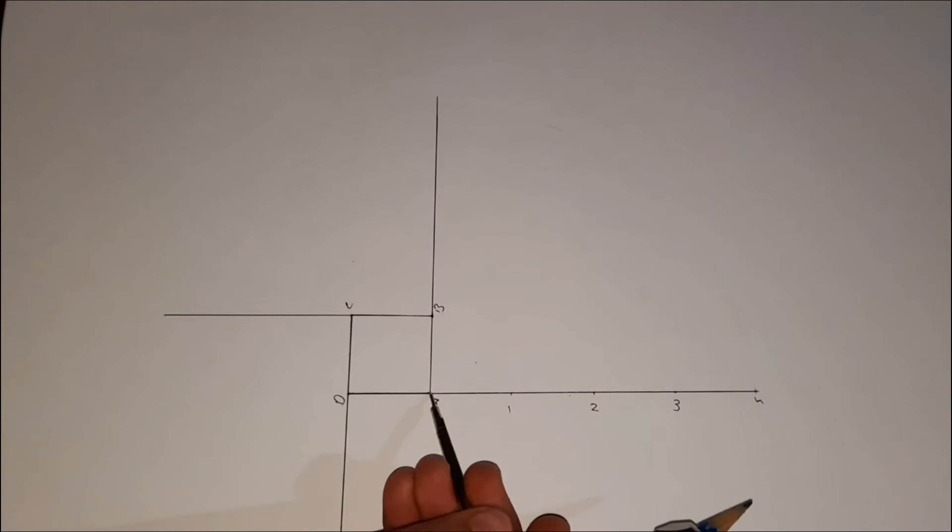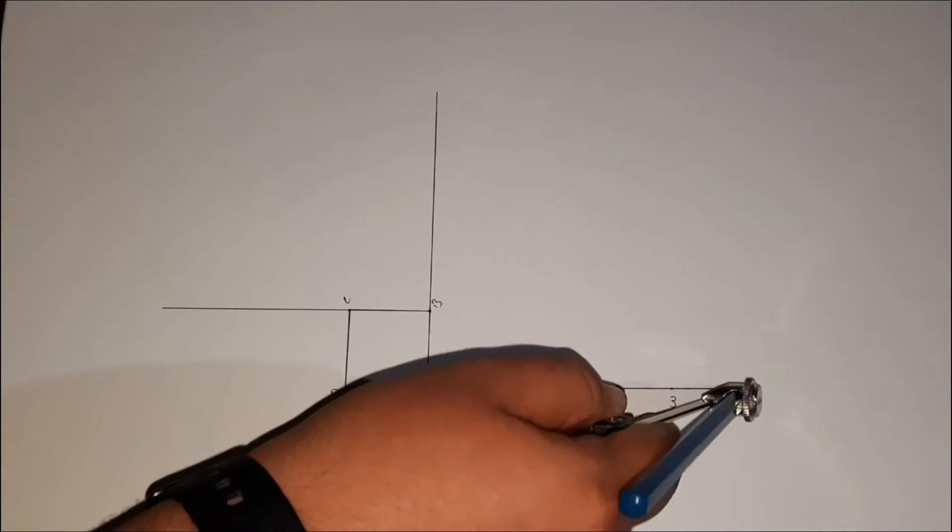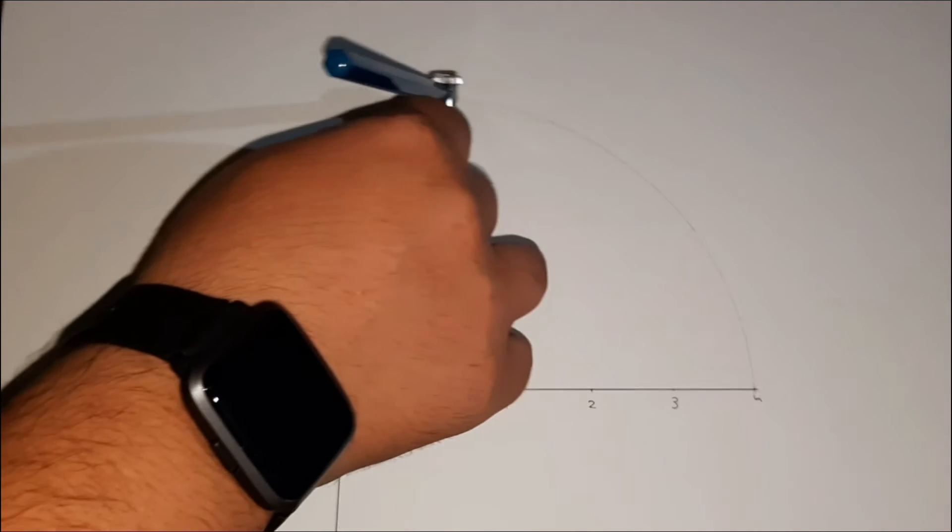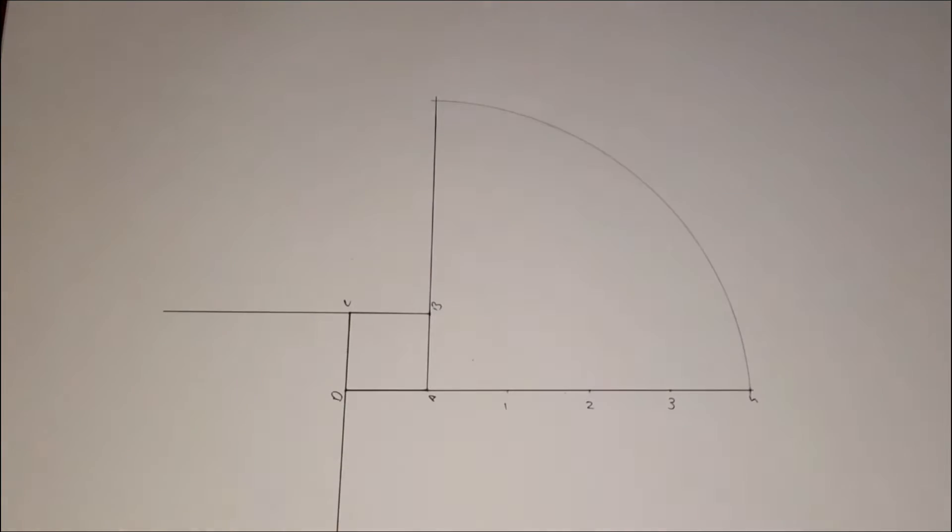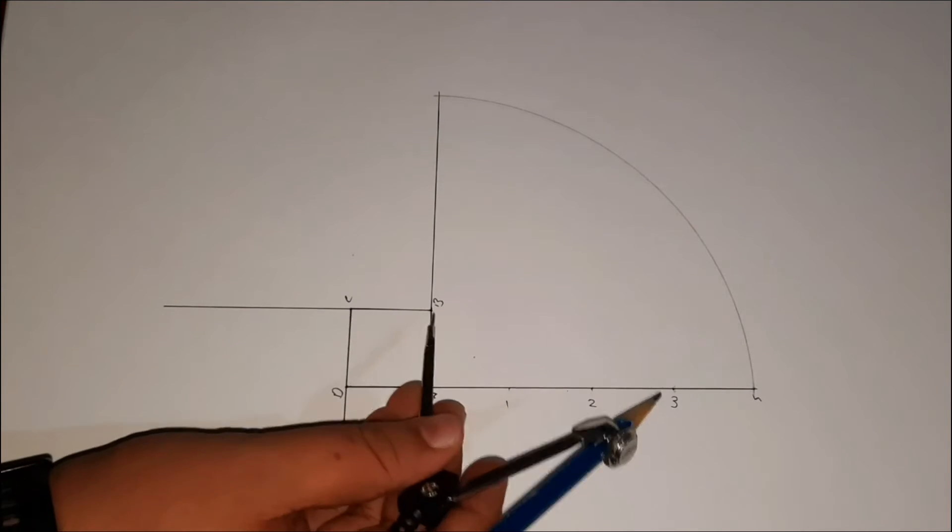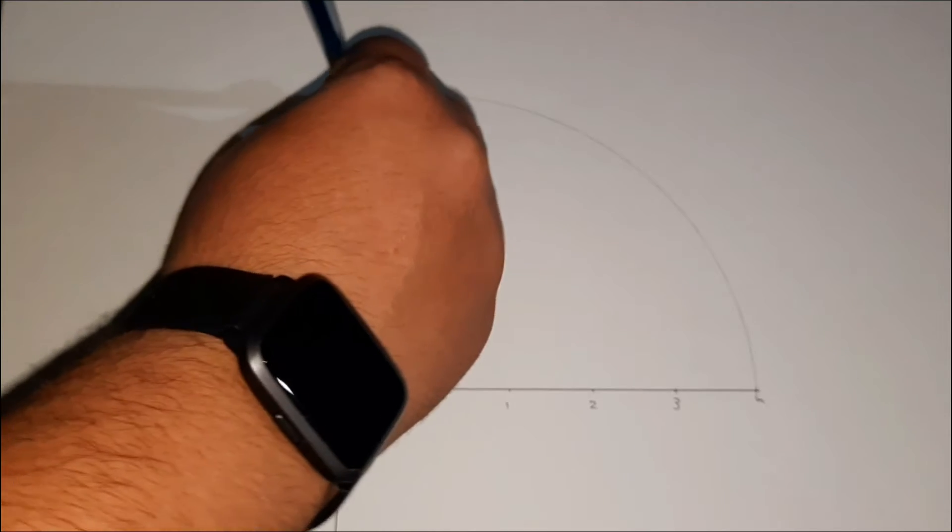Taking A4 as radius, we will make a part of circle till this point. Now taking A3 as radius and B as center, we will do the same this side.